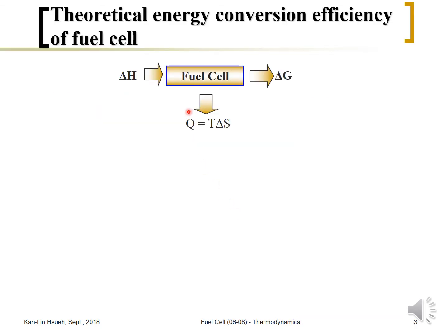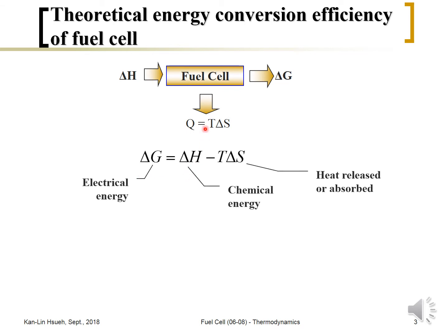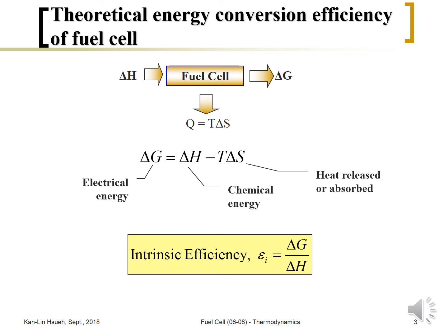As we already know, the fuel cell is an energy conversion device: it electrochemically converts the chemical energy of the fuel into electricity — the Gibbs free energy — and may also release or absorb some heat from the environment. From energy conservation, the total energy equals: ΔG = ΔH − TΔS, where T is temperature in Kelvin. Here ΔH is the total chemical energy, TΔS is heat released due to the reaction, and ΔG is the maximum electrical energy released. The intrinsic efficiency ε_i equals ΔG divided by ΔH.